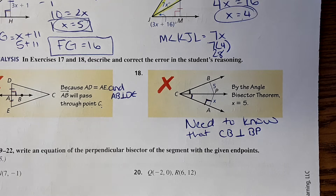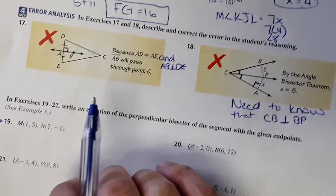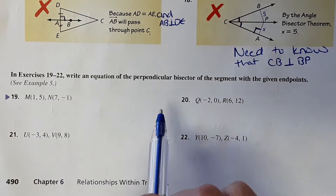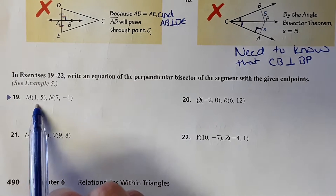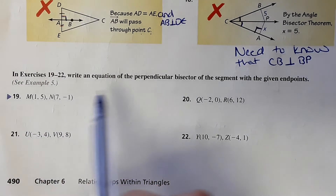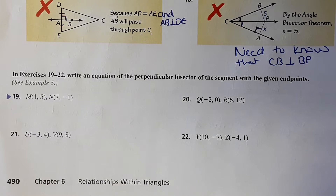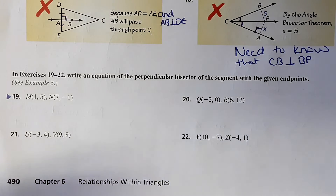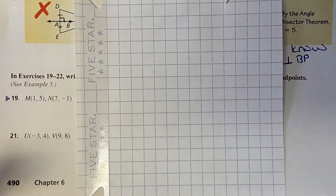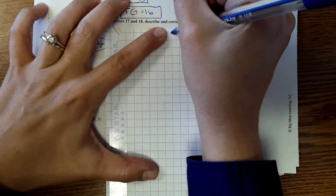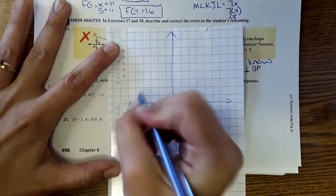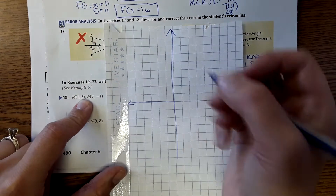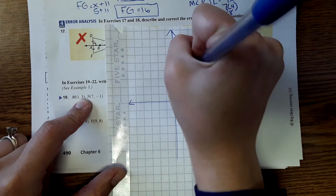The last set of problems — we're only going to do one because they're kind of long, but I want you to see it. It says write an equation of the perpendicular bisector of the segment with the given endpoints. They just give us two points and want a perpendicular bisector. Let me draw it first on graph paper. Point M is at (1, 5) and N is at (7, negative 1).